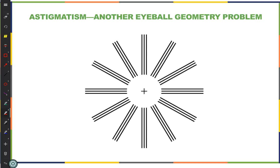Astigmatism is an asymmetrical misshaping of the cornea. With myopia the cornea has too much curvature; with hyperopia the cornea is too flat. Astigmatism is an asymmetry — you effectively have two focal lengths, one that applies to horizontal light and one for vertical. You can make horizontal come into focus but not vertical, which is not perfect. This picture here is used for quick identification of astigmatism.